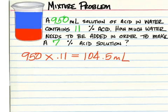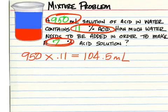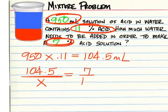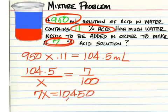Now we have to figure out, instead of this being 11% of this number, we want it to be 7% of another number. So 104.5 over x equals 7 over 100. Cross multiply to get 7x equals 10,450.